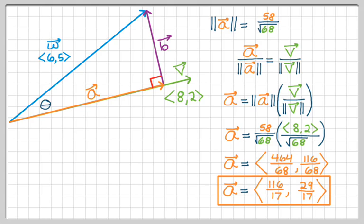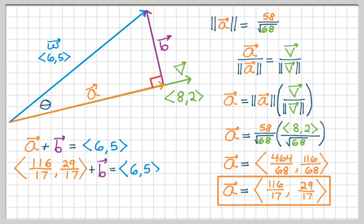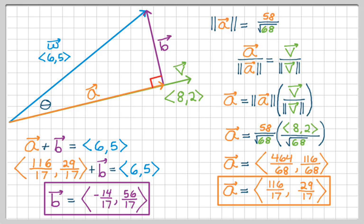Now I need to find vector b. But I'm not going to work very hard for that because in the given information, it said that a and b actually add up to this vector w that I've now defined, so <6,5>. So that means that the vector I just found plus b is <6,5>. And then I'm going to just subtract the vector a from both sides. And get that b is equal to <-14/17, 56/17>. You can confirm that on paper or with a calculator.